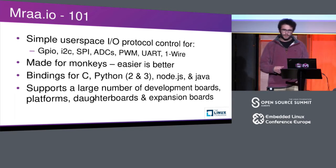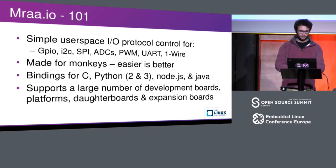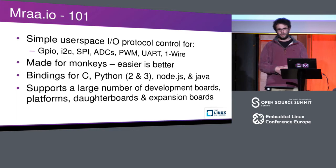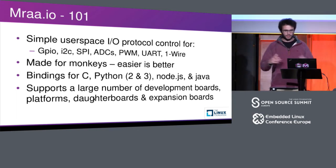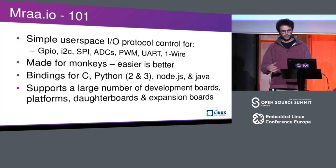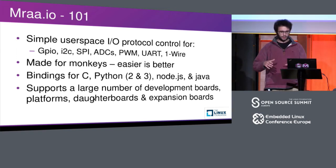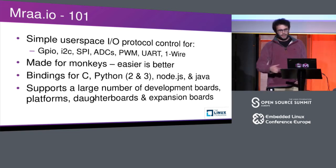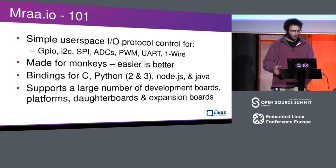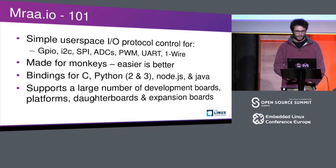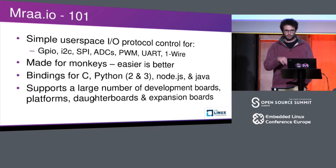A little terminology: we talk about libmraa and mraa.io. mraa.io is meant to be the API standard and libmraa refers to the Linux implementation of the mraa.io specification. The aim is to have multiple mraa.io implementations for things like Zephyr, Windows, and a few others. But really here we're talking about libmraa for Linux.